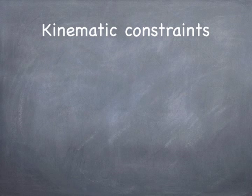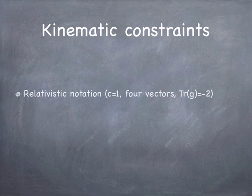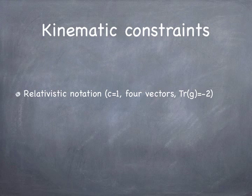There are two basic aspects to the problems of decay and scattering. One is the kinematic constraints placed on the process by relativity and Lorentz invariance. Because we're doing relativistic calculations, I'm going to simplify the math by letting C equal 1. We're going to be using four-vectors, which are four-component objects. The time component is the energy, and the three spatial components are the momentum in the three space directions. The metric we're using has a trace of negative 2, meaning time comes in with a positive sign and the three components of momentum come in with a minus sign when calculating inner products between momenta.